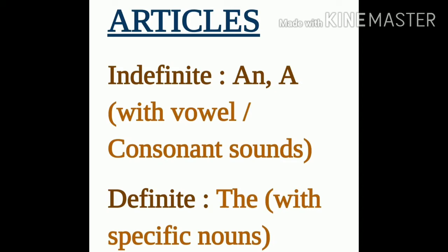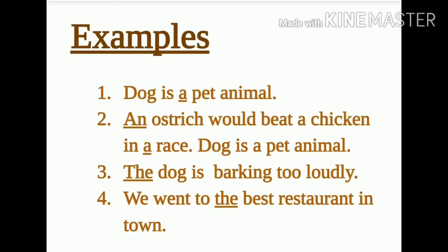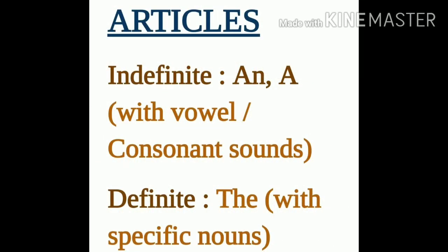We divide them into indefinite and definite articles. A and an are indefinite articles. When you are talking about a general version of the noun, we use an indefinite article — jab bhi hum general kisi noun ki baat karte hain, at that time we use a or an. For example: 'Dog is a pet.' And 'An ostrich would beat a chicken in the race.' In these examples, the sentence is talking about dogs or ostriches in general. When your meaning is general, use an indefinite article.